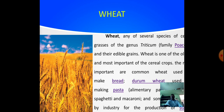Wheat is one of the oldest and most important of the cereal crops. The most important types are common wheat, used to make bread, and durum wheat, used in making pasta — alimentary pasta such as chapati and macaroni. Some wheat is also used by industries for the production of starch, paste, malt, dextrose, glucose, and alcohol.